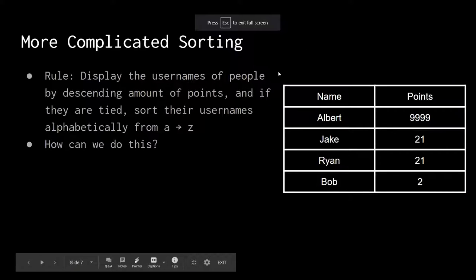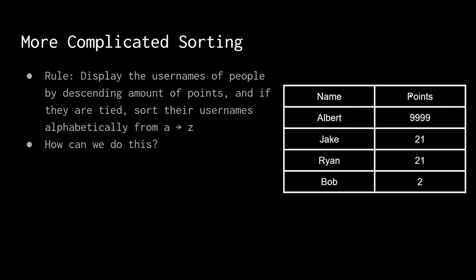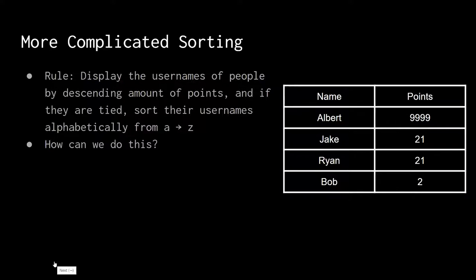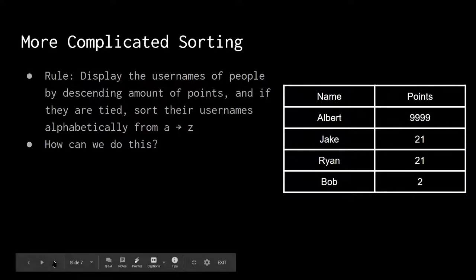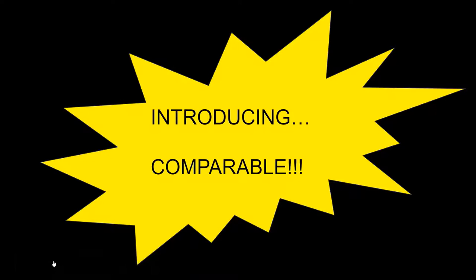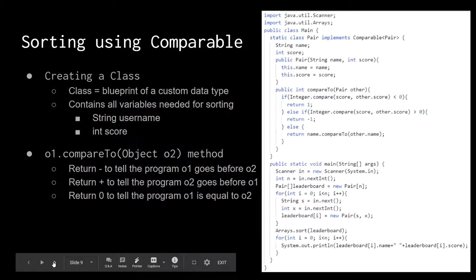We're given a leaderboard with all these points, and we want to sort by decreasing number of points, and then if they're tied, sort them by name. We have more than one criteria here, which is what makes it really complicated. We can use something called Comparable, which is a really nice tool that Java gives us.